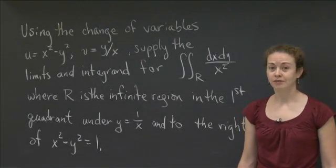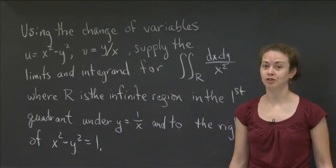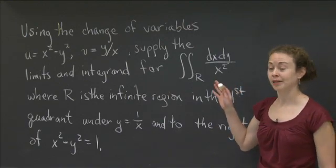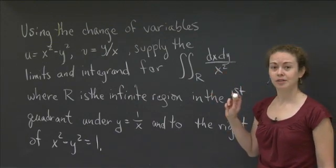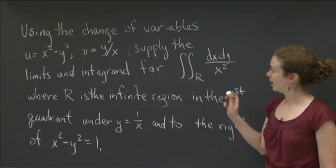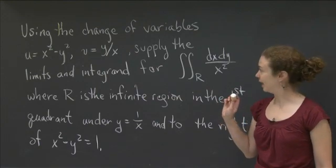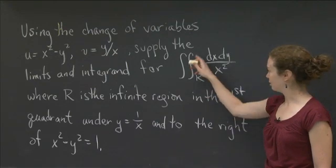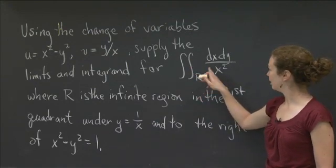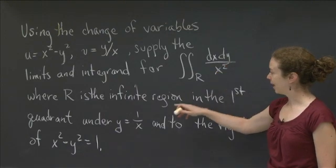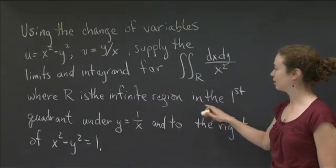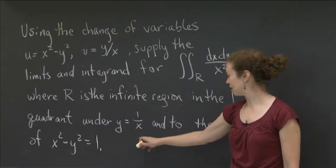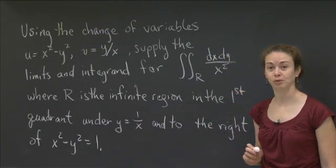Welcome back to recitation. In this video, we want to work on using the change of variables technique. In particular, we're going to look at the following problem: using the change of variables u equals x squared minus y squared, and v equals y divided by x, supply the limits and integrand for the double integral over region R of 1 over x squared dx dy. R is the infinite region in the first quadrant that is both under the curve y equals 1 over x, and to the right of the curve x squared minus y squared equals 1.